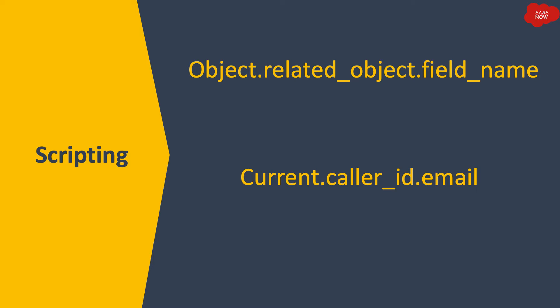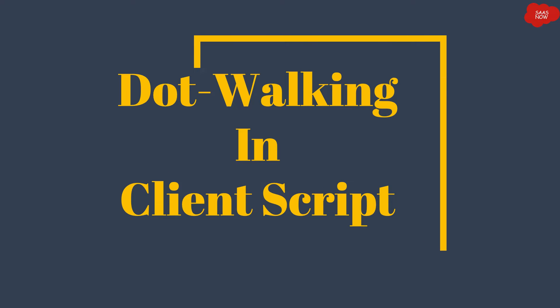The object can be 'current' or 'gr' if you are using a GlideRecord. So you write: current.caller_id — where caller_id is the field on the current table — and since that is a reference field, you then dot-walk to the referenced sys_user table and access the email field with dot email. That's how you access the email value of the caller.